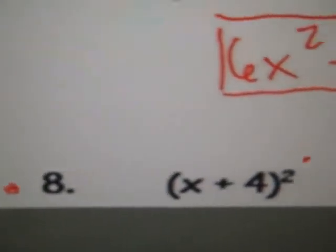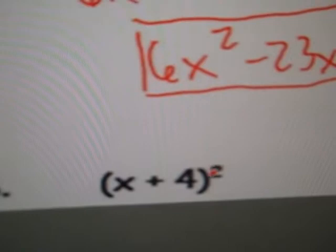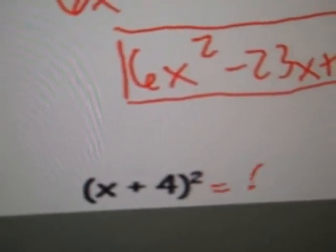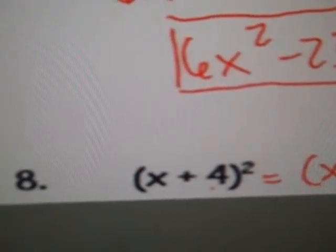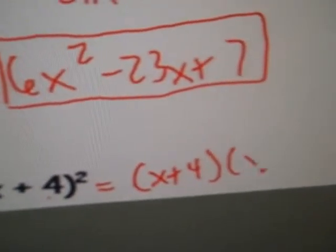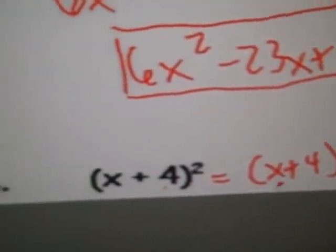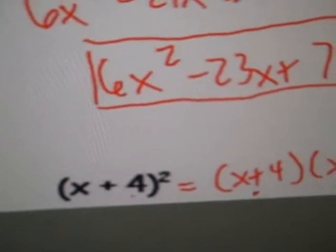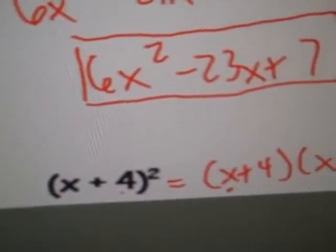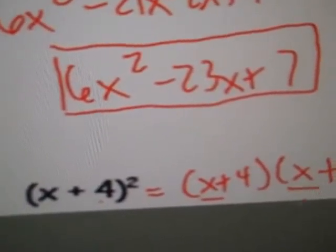Now, number 8. When it's written like this with the squared, you're just multiplying that same term, the x plus 4, twice. Once. And the second one, x plus 4. Now, with this, I can do FOIL